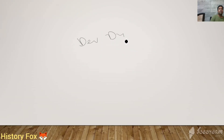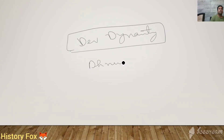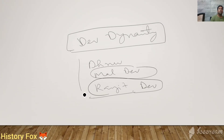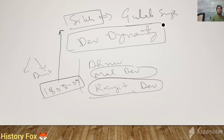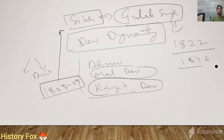So this is all about the Dev dynasty. The prominent rulers of the Dev dynasty are Dhruv Dev, Mal Dev and Ranjit Dev. After the time period of Ranjit Dev, the kingdom disintegrated. In 1808-1809, Ranjit Singh defeated the Dev dynasty and established the Sikh empire in the Jammu region. During this chaos and confusion, there was the rise of one man — Gulab Singh. He became Raja of Jammu in 1822 and Maharaja of Jammu and Kashmir in 1846. Our next topic is the rise of Gulab Singh.